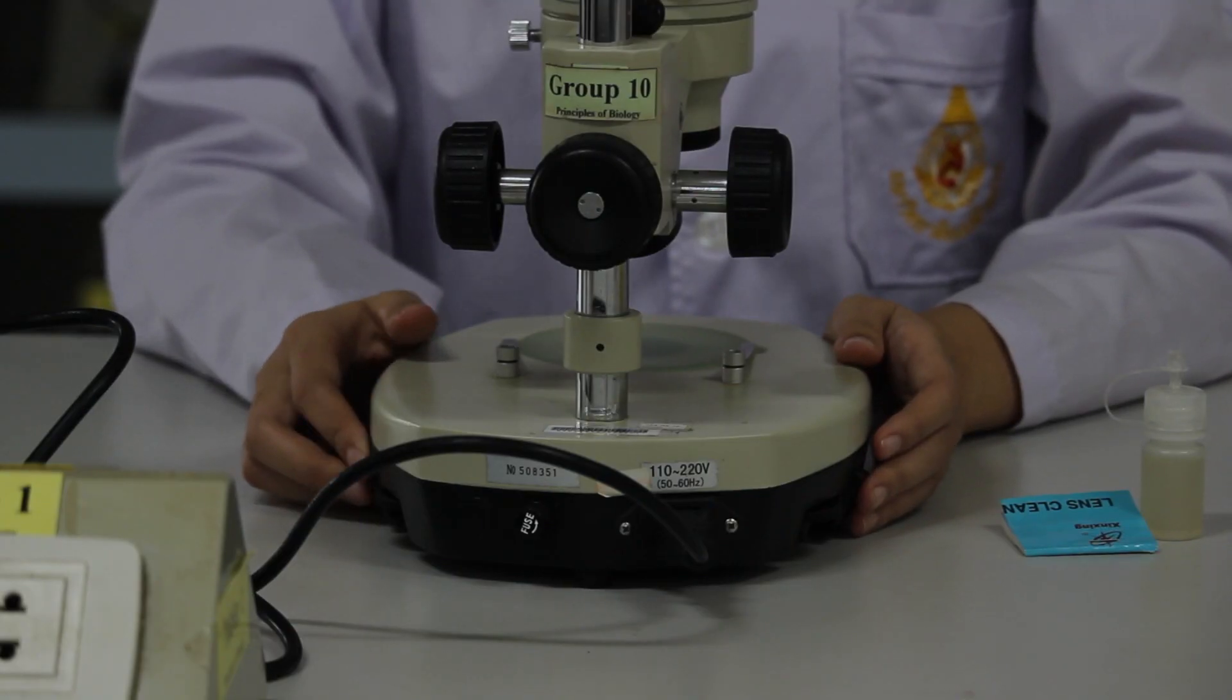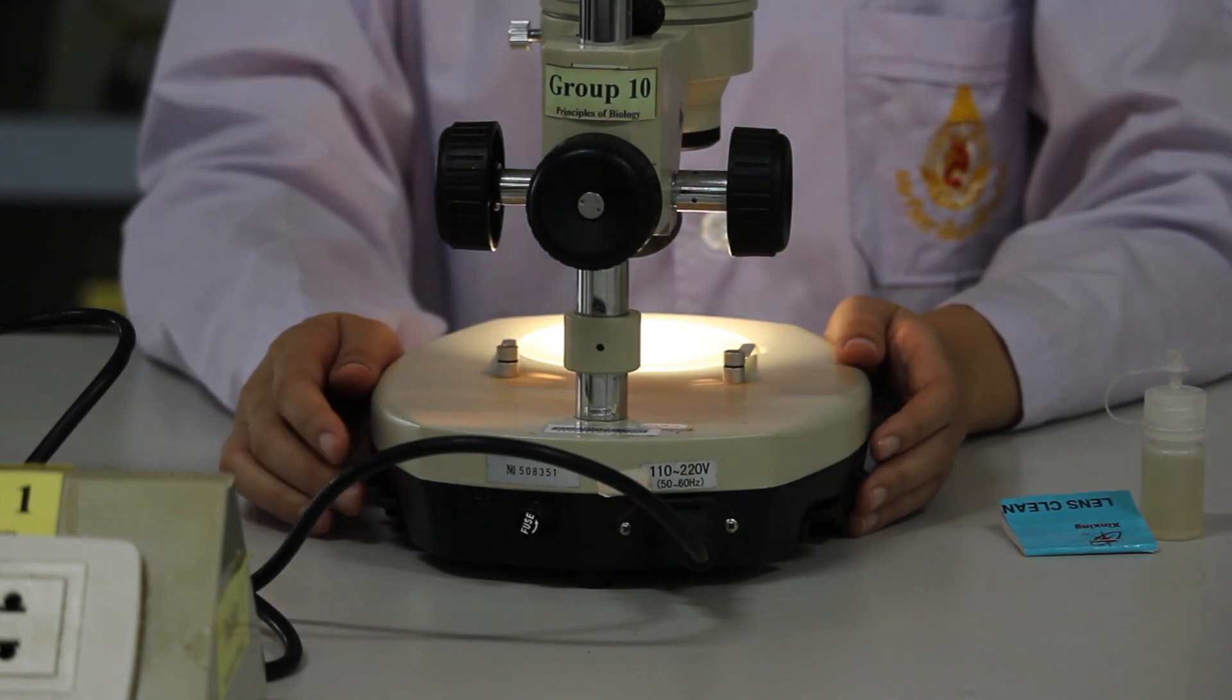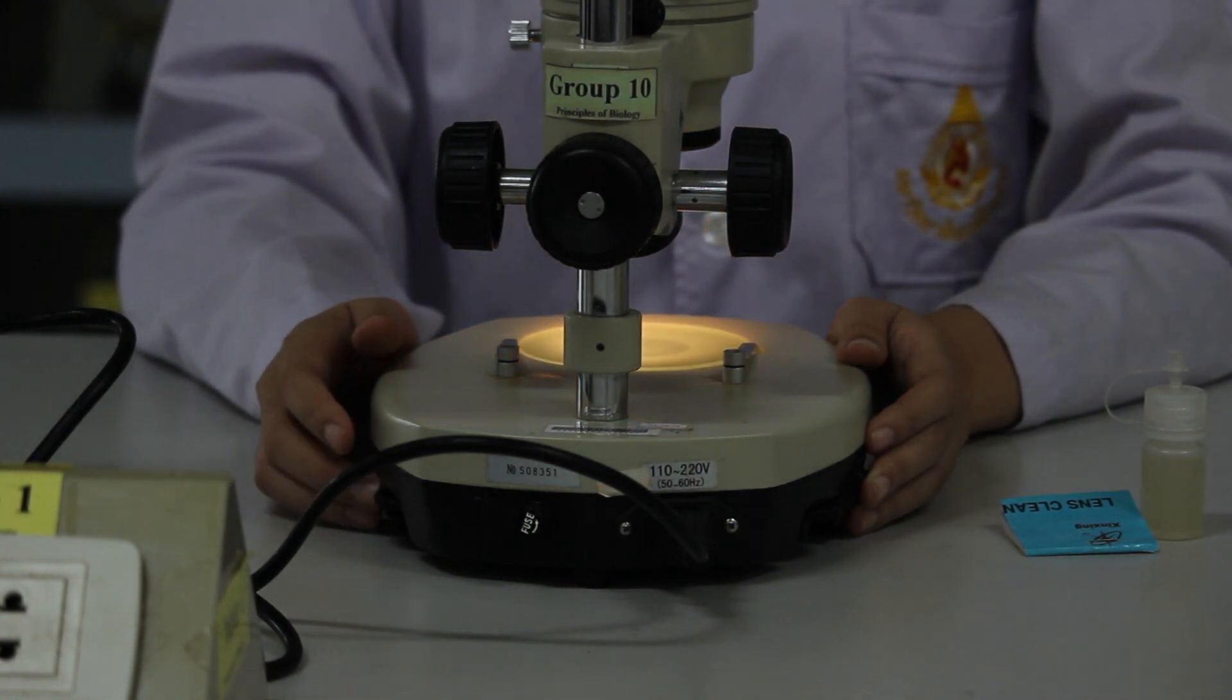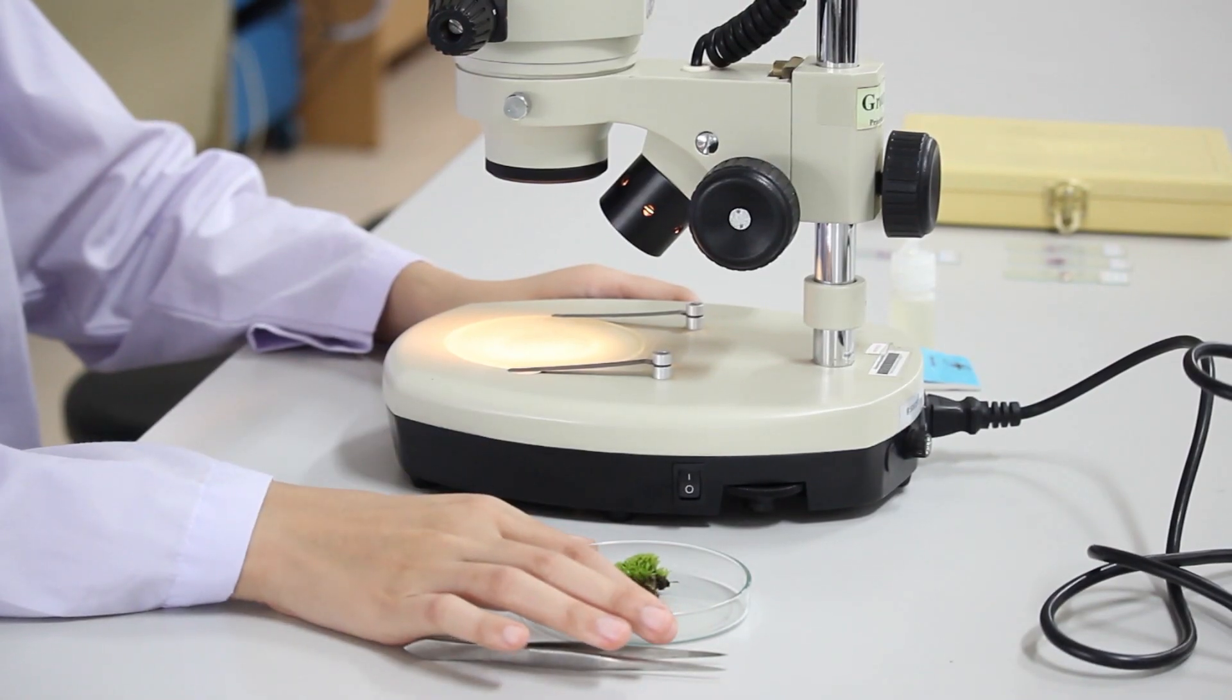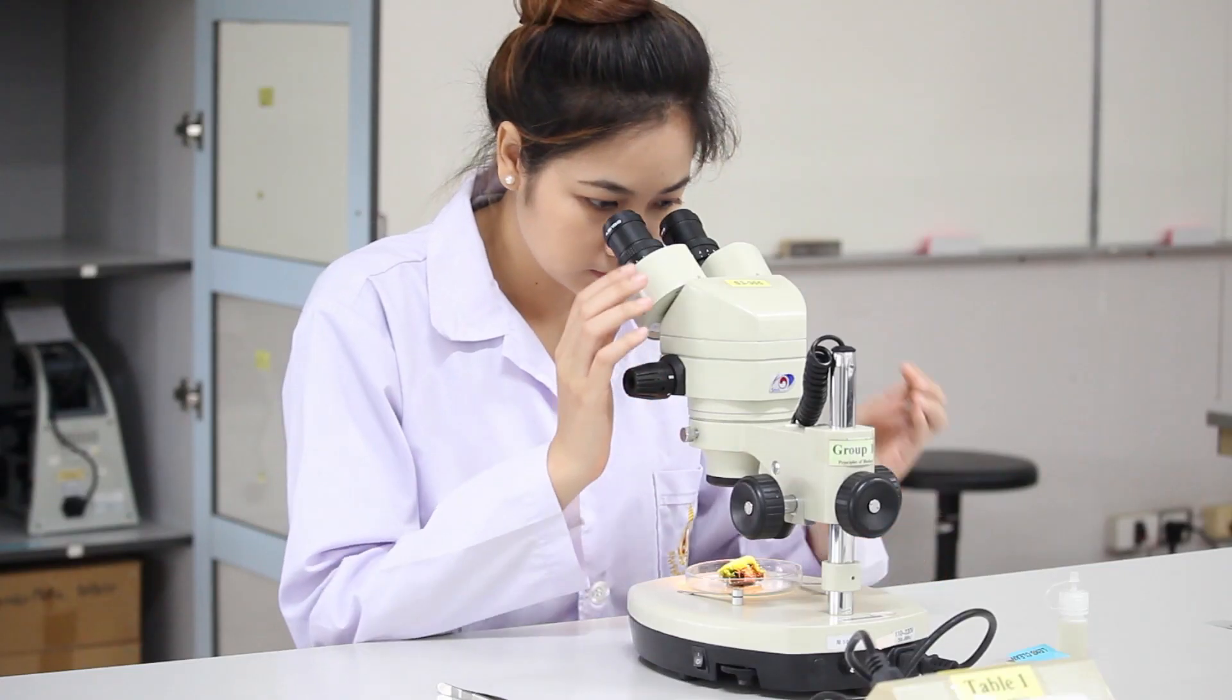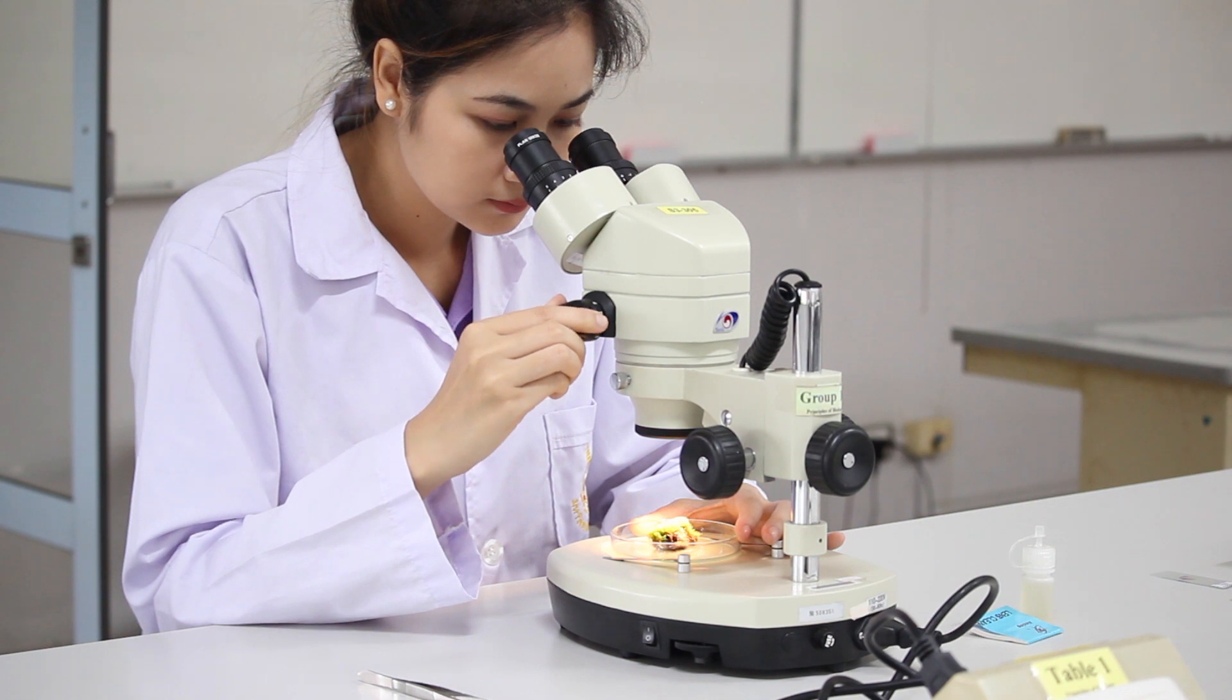Next, turn on the light sources on the stereo microscope. The stereo microscope has two light sources: one from below and the other one from above. The switches are at the left and the right side of the microscope. After that, adjust the light intensity by turning the light adjustment scale located next to the light switch. Put the specimen on the stage and look into the eyepieces. And then, adjust the magnification knob to an appropriate magnification.